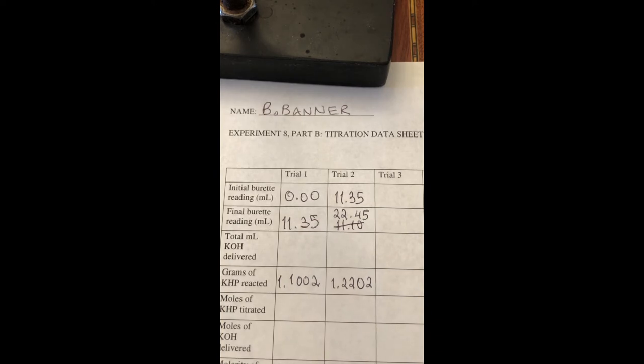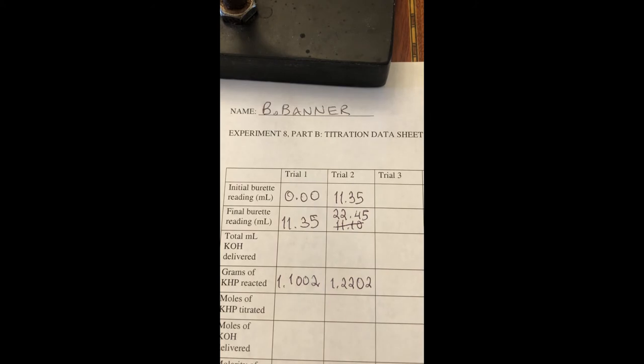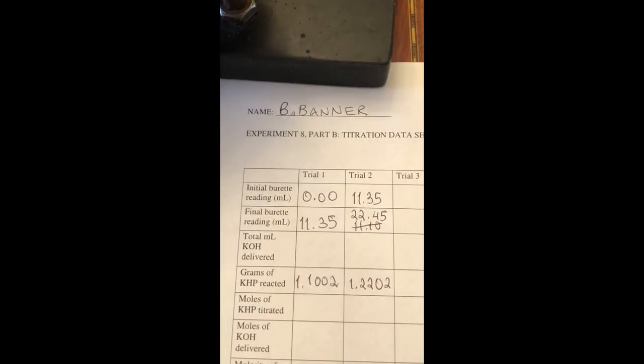We have here the grams of KHP for each trial. And the one thing we want to do is you always want to show your calculations on a separate piece of paper. And these need to be well organized. And we're going to do these in pencil so that if we make mistakes, we can erase them. So here is our calculations. When you have multiple trials, you're only required to show the calculations for just one trial. And it is assumed that the other set of calculations will be kind of a repeat, just with slightly different numbers.